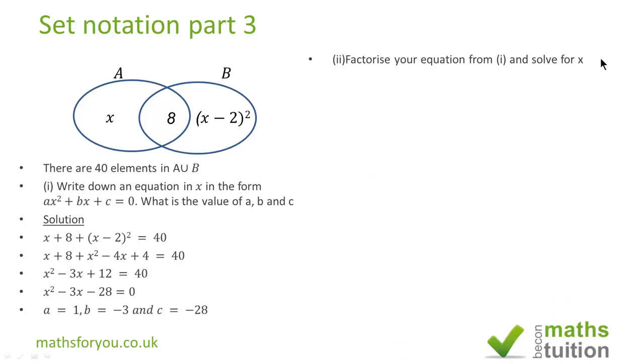Factorize your equation from part 1 and solve for x. The equation from 1 is x² - 3x - 28 = 0. Now we want a factor pair such that when they are multiplied you get 28 and when you add you get minus 3. So minus 7 and plus 8 do come into mind.